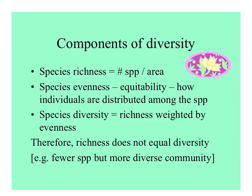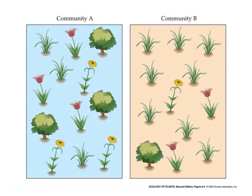Remember that even though many people talk about species diversity as simply the number of species in an area, that's only one component of diversity — species richness. Equitability, or species evenness, is really important for comparing communities. Richness weighted by evenness gives diversity, so richness does not equal diversity. Here are two communities, A and B, to illustrate this.